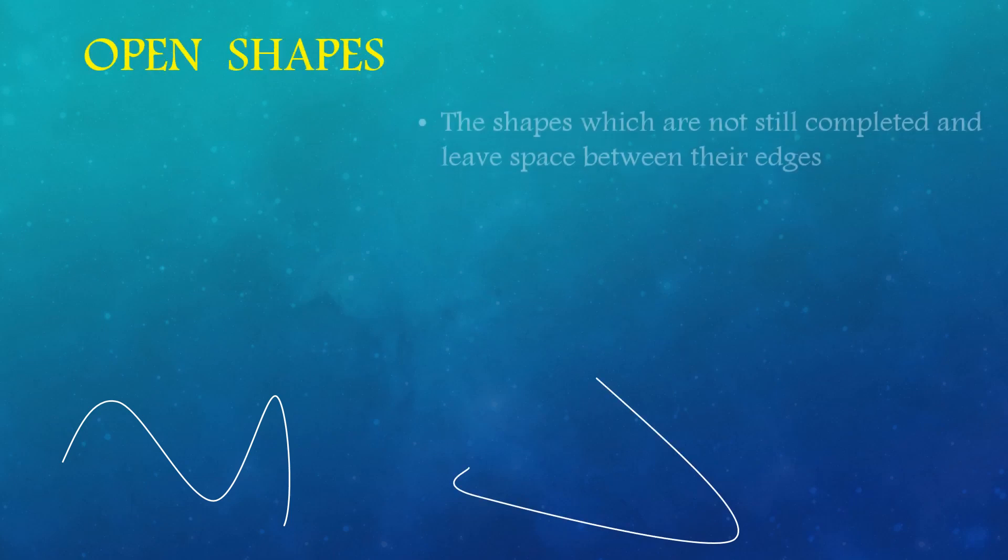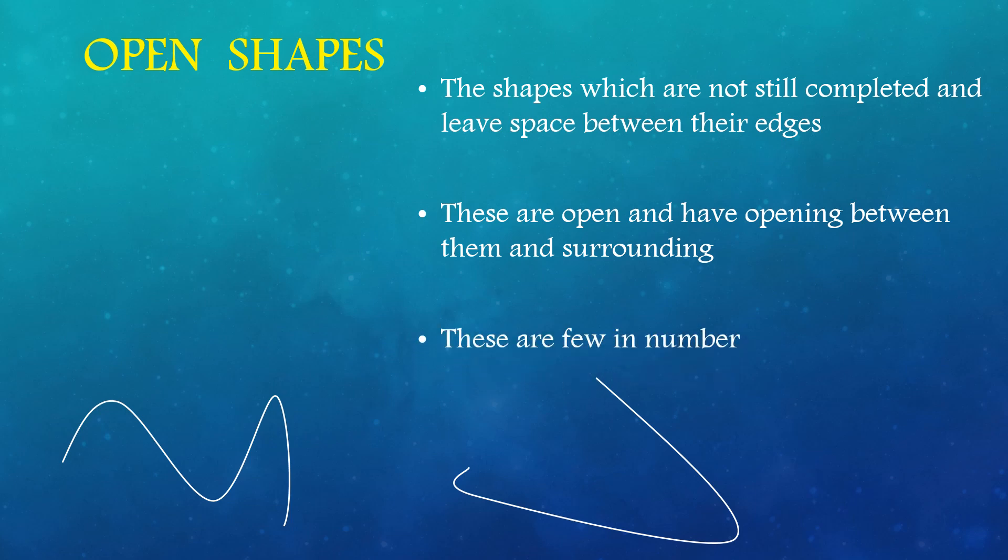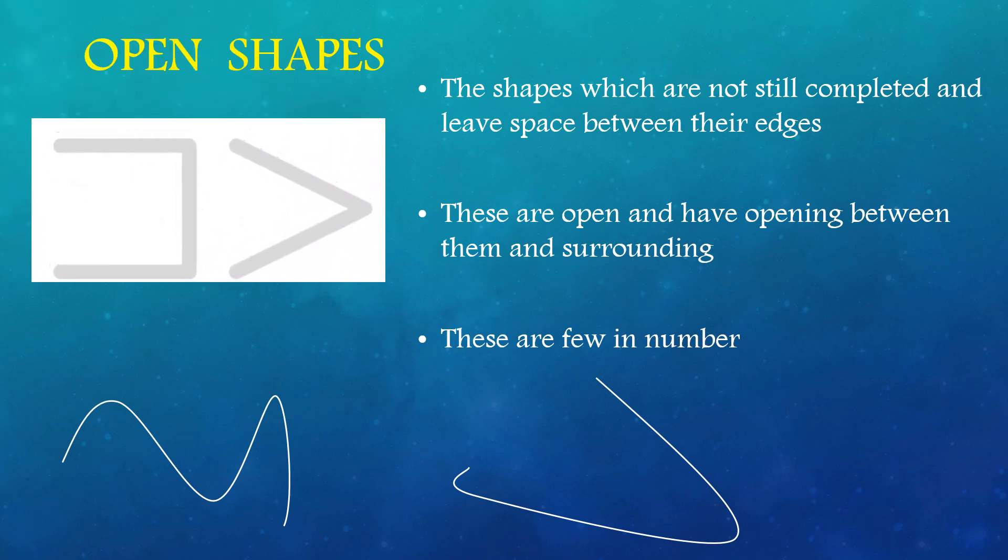Have you seen such types of shapes? They are called open shapes. The shapes which are not yet completed and leave space between their edges. These are open and have opening between them and their surroundings. There are few in number. These are also some examples of open shapes.